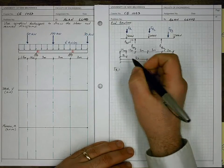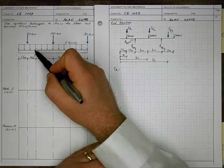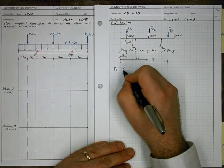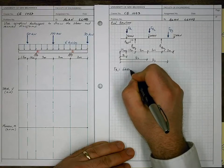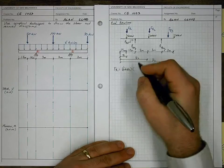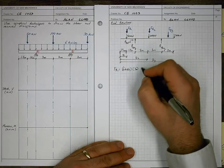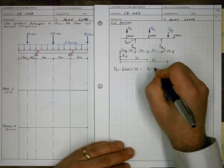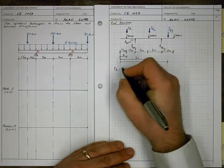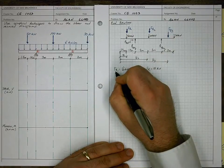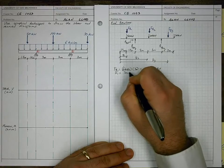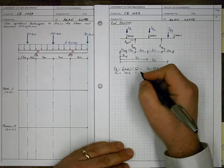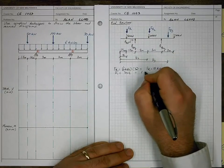FR1 is going to equal the area under the load curve to the left of A. So it'll equal the magnitude, 6 kN per meter, multiplied by the length of that curve, which is 3 meters. This gives us FR1 equal to 18 kN. We can find X̄1 is simply equal to 3 meters over 2 — the centroid of a rectangle is half the width — and this is 1.5 meters.